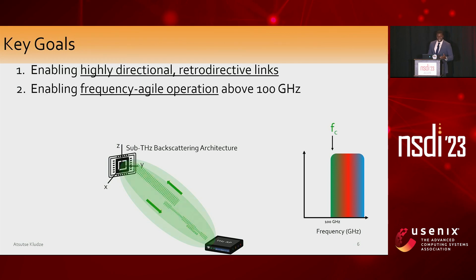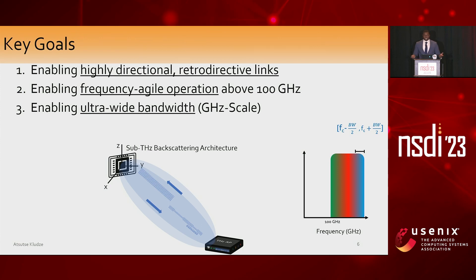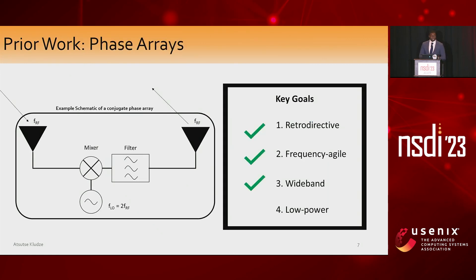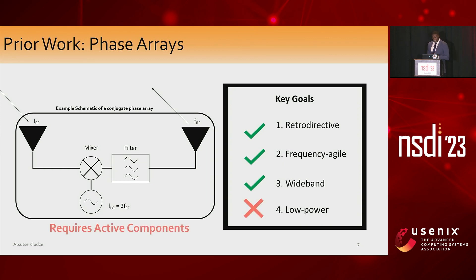Secondly, we want this to be frequency agile so that it can work across a multiple range of center frequencies — solving the narrowband issue referred to before. We would also like this to have ultra-wideband capability, so that it can work for any device where bandwidth is not a limiting factor. But more importantly, all of this has to be performed at zero power cost. Prior work has tried to solve these issues with phase arrays, which can actually create a retroactive link by conjugating the phase of any incoming signal per each radiating element, and with proper design this can be made frequency agile and wideband. But the problem is that all these techniques typically require active components, which means they can't really be low power, especially when you consider that power scales with frequency, which is already at 100 GHz.